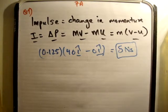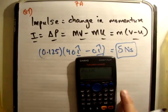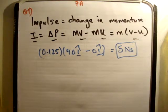Alright, so just let me confirm that. 40 multiplied by 0.125. Yeah, so 5 newton seconds. Thanks for watching, please pass it on to your friends and subscribe to my channel.